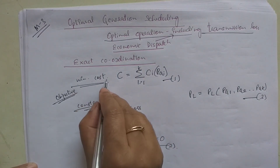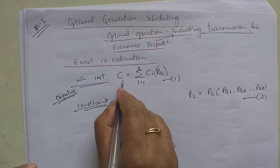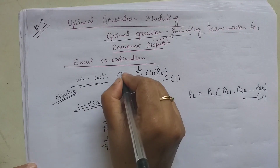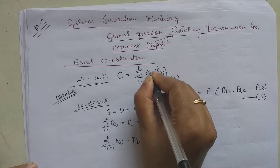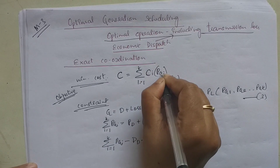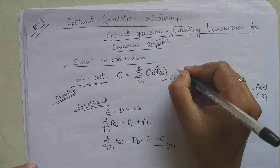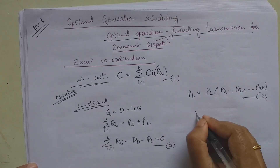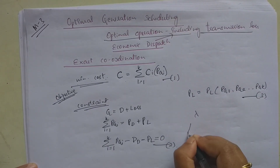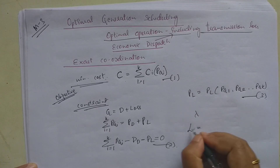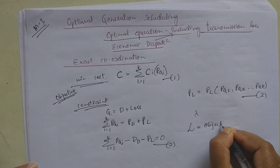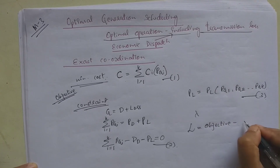The objective is to minimize the cost function, which is a nonlinear programming problem and cannot be solved easily. It is nonlinear because cost C_i is not independent of P_Gi. A nonlinear programming problem can be solved using the Lagrangian multiplier lambda.